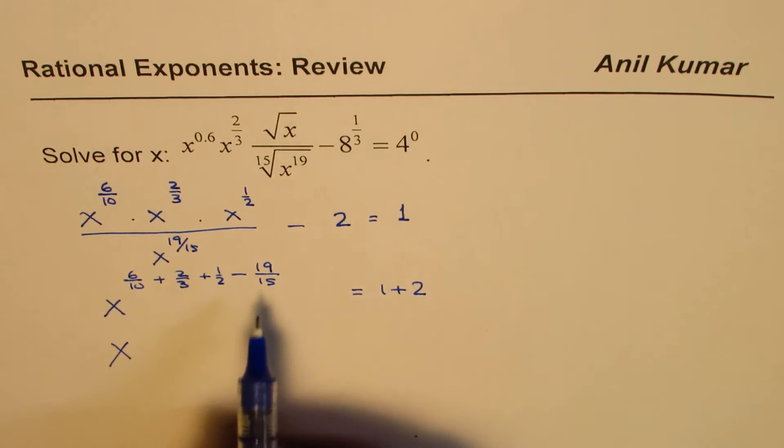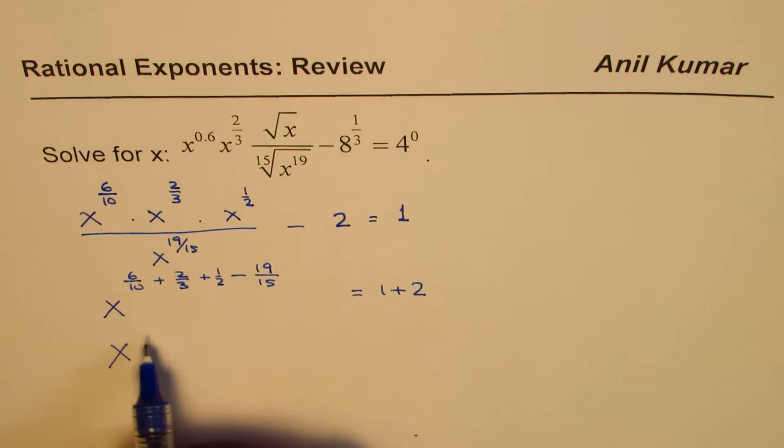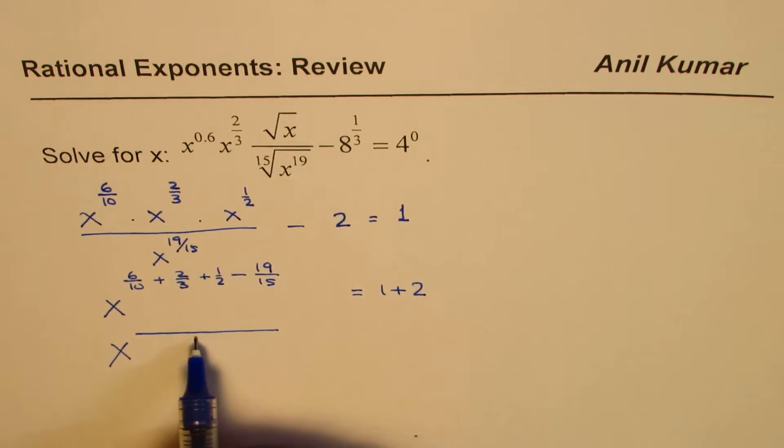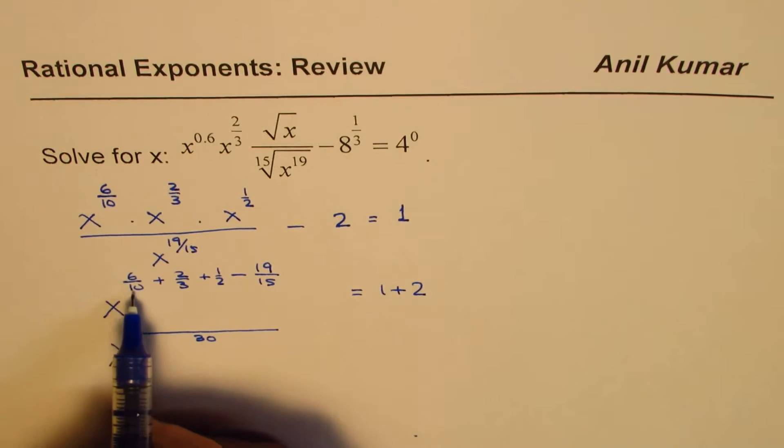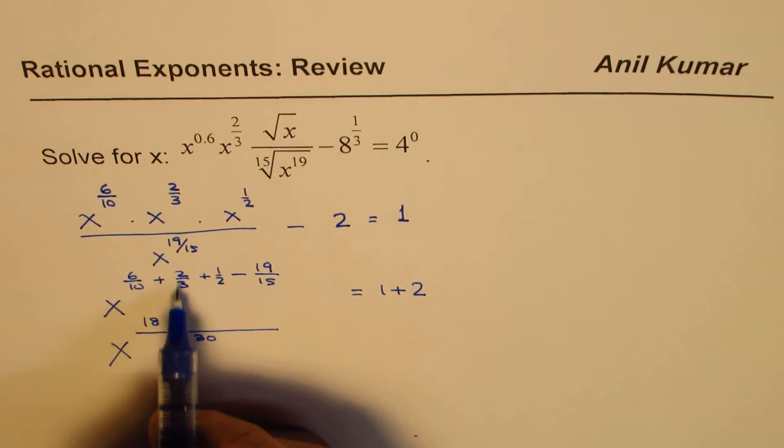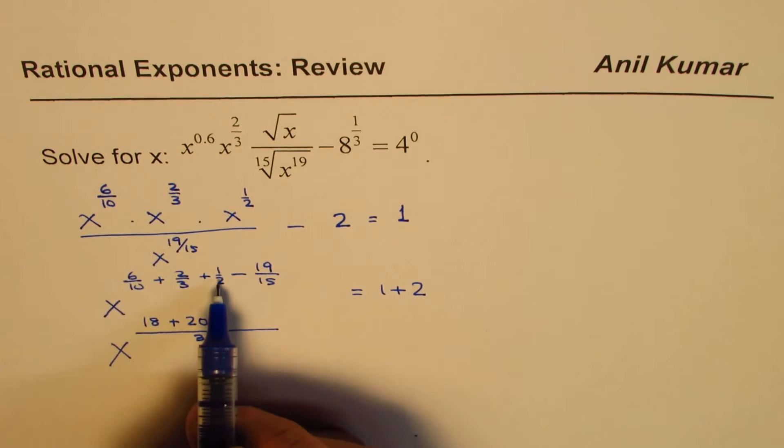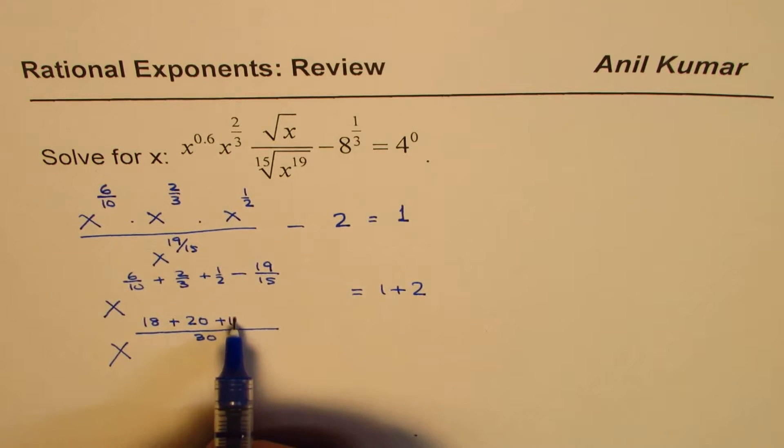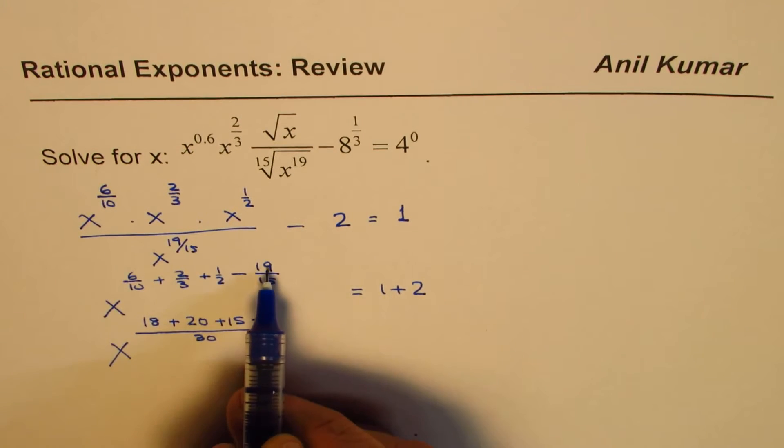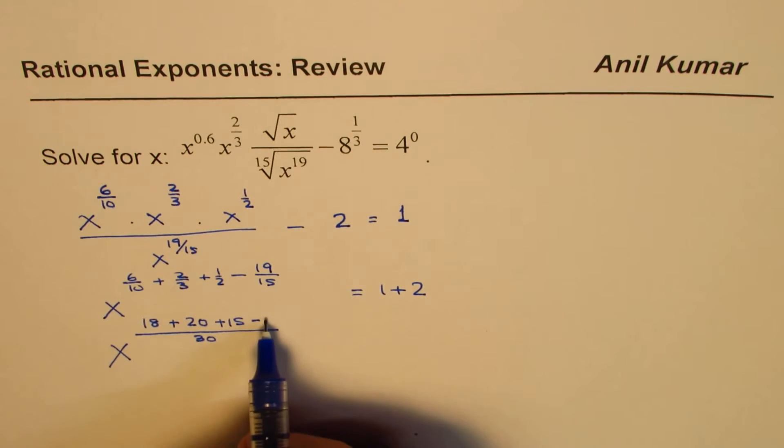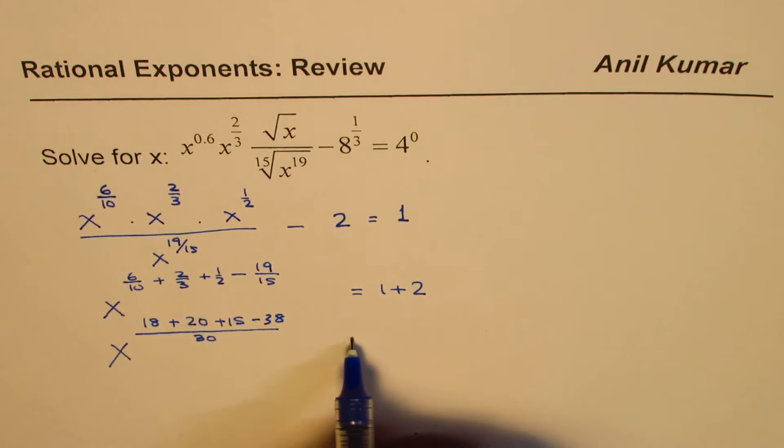Let's combine them. What is the common denominator? The common denominator is 30. Then this becomes 3 times 6, which is 18, plus 10 times 2, which is 20, plus 15 times 1, which is 15, minus 2 times 19, which is 38, all over 30. This equals 1 plus 2, which is 3.